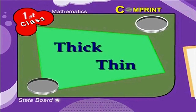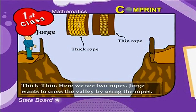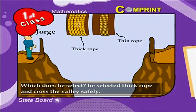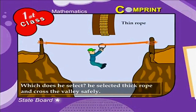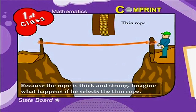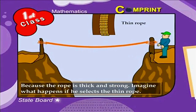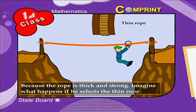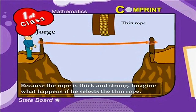Thick and thin. How can we find the difference between thick and thin? Here we see two ropes. George wants to cross the valley using the ropes. Which rope does he select? That's good — he selected the thick rope and crossed the valley safely because the rope is thick and strong. Imagine what happens if he selects the thin rope.